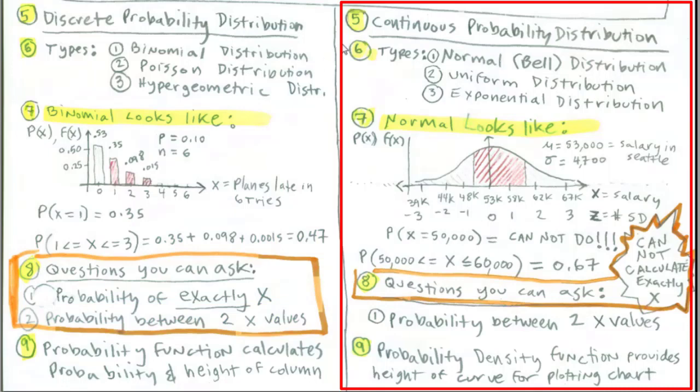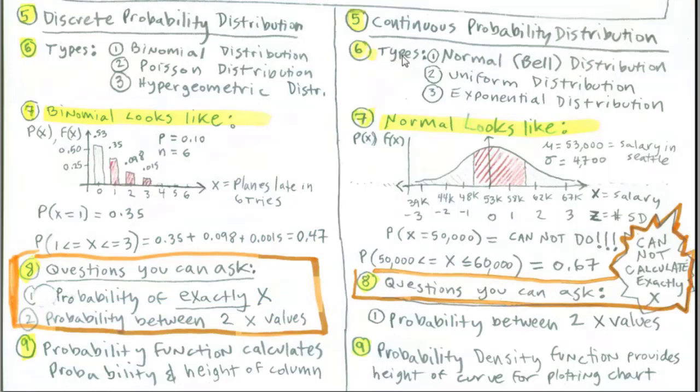Now, chapter six, continuous probability distributions. We're going to talk about the famous normal or bell-shaped distribution, uniform and exponential distribution. The normal curve will not have columns. It'll be a plotted curve where it's area under the curve that determines our probability. And guess what? We're not allowed to calculate an exact x.